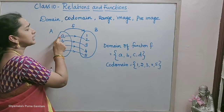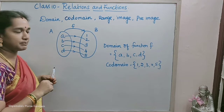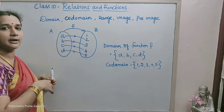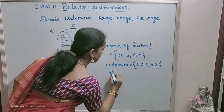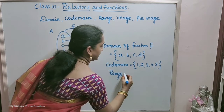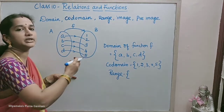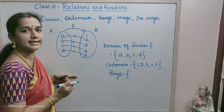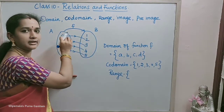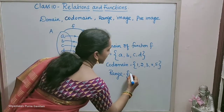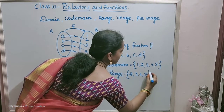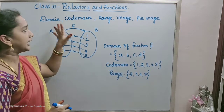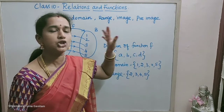The preimage is the opposite: A is the preimage of 2, B is the preimage of 3, C is the preimage of 4. The range is only those elements of set B that are actually connected from set A. Since 1 is not connected to any element in set A, the range is {2, 3, 4, 5}. This is how you find domain, codomain, range, image, and preimage of a function.